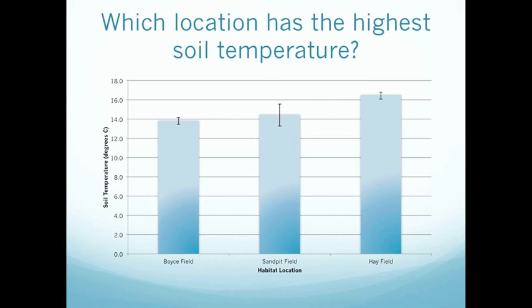So, which location has the highest soil temperature? In order to really assess this, yes, of course we have to look at the averages, but we also have to look at the error bars. All we do is draw a line across from the bottom of the error bar which has the highest soil temperature — in this case the Hayfield — and assess whether or not it overlaps with any of the other error bars from the other versions of the independent variable, in this case the habitat locations.